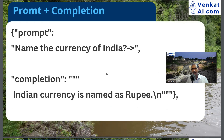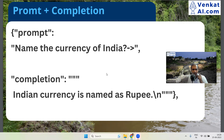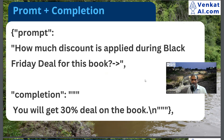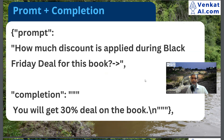If I'm talking about the training, there is a prompt and there is a completion. The prompt is a question and the completion is the answer. For example: 'What is the currency of India?' — 'The Indian currency is named Rupee.' We feed the internal data. In this case, what is the prompt? 'How much discount is applied during Black Friday deal for this book?' That's the prompt. The completion is: 'Customers will get 30% deal on the book.' I train with this data and the answer will be correct.